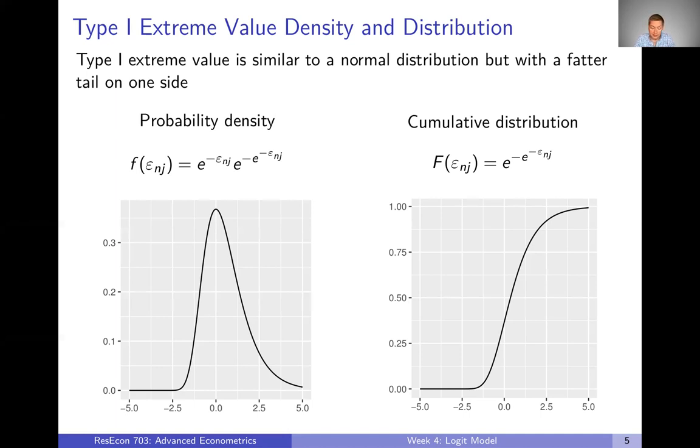And then if we want to look at the cumulative distribution instead, it's plotted here. You can see once again, kind of similar to the normal CDF, but just with on the positive side, it's a little more gradual slope to correspond to that fatter tail.